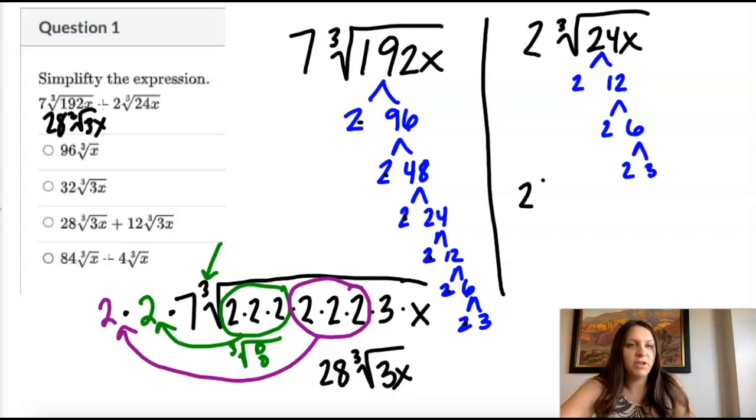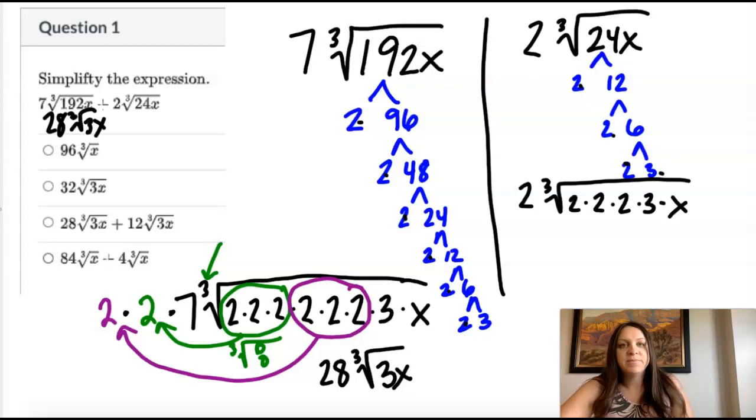I saw the two in the front. I have a cube root. And I'm going to take these numbers. Two times two times two times three will give me 24 times x. So I check my index. I'm looking for three of a kind, which I have right there. So when that comes out of the radical, we just write it once.